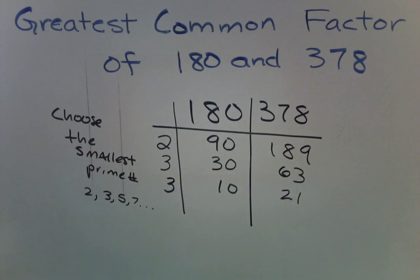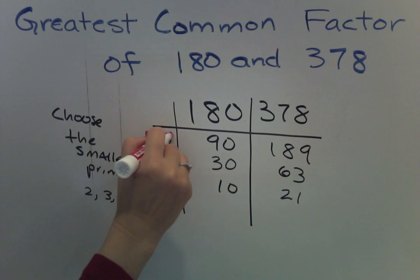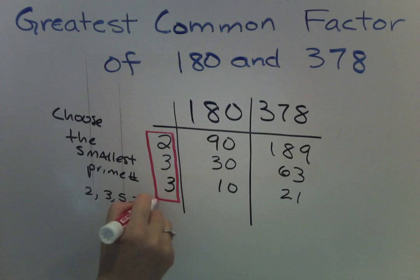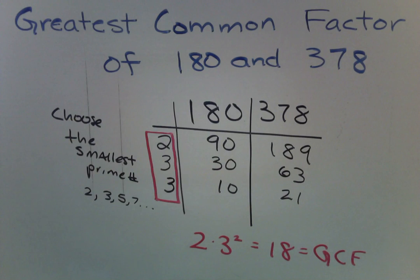And now what we do is we are going to circle all the numbers on the left right here. And we are going to multiply them out. This gives us 18. 18 is our greatest common factor for 180 and 378.